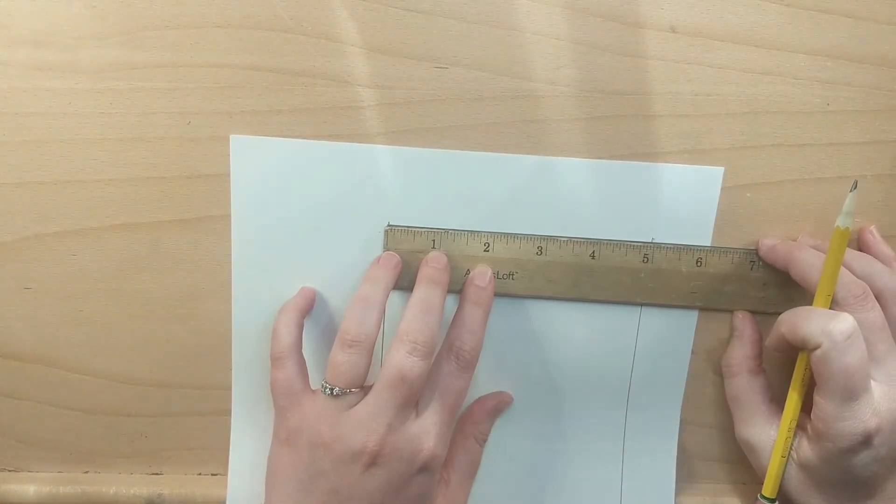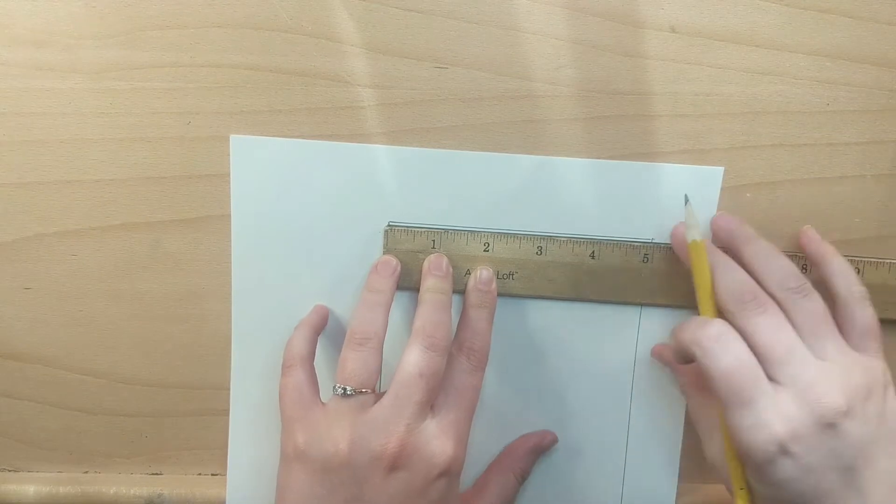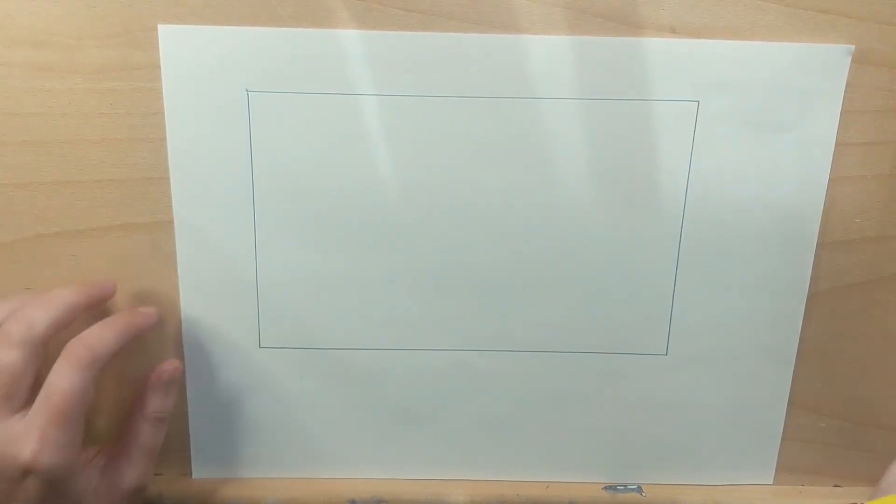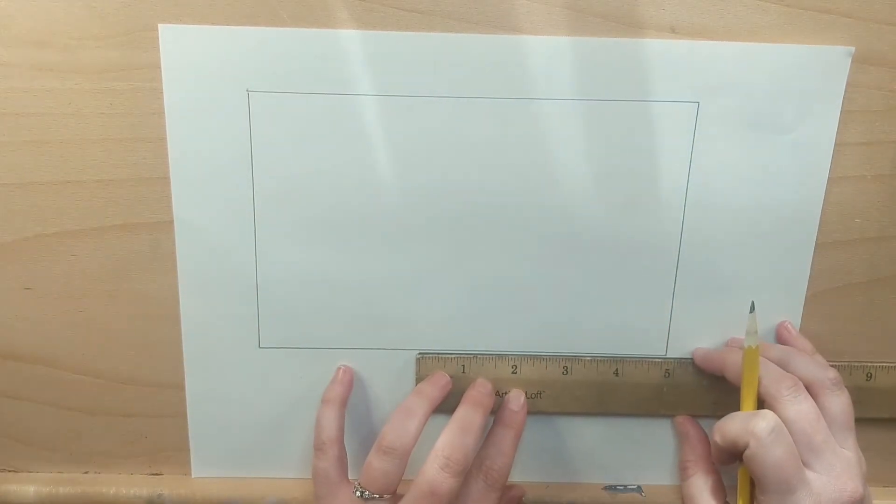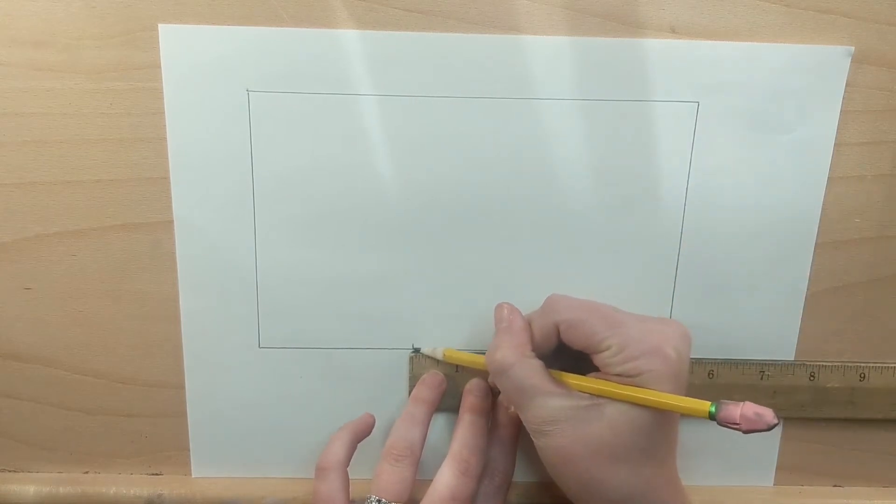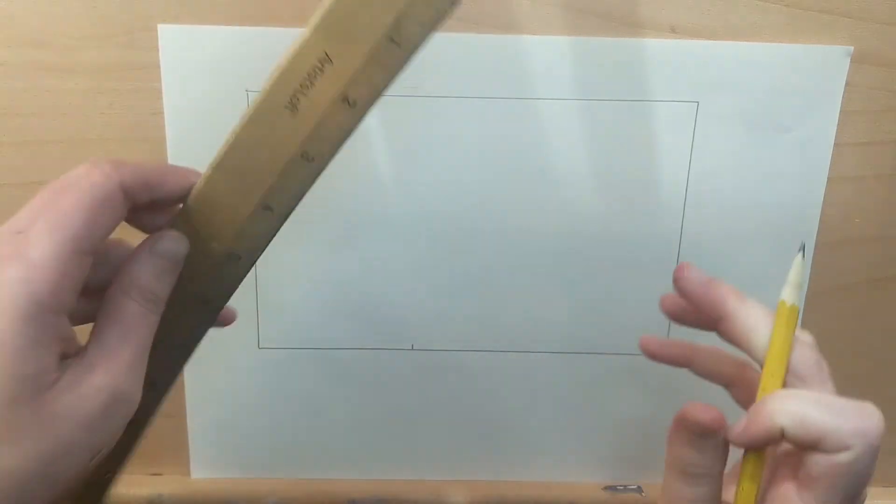Now inside that rectangle on the right side, we're going to create a 5 inch by 5 inch square. So 5 inches in from the right side, I'm going to make a little mark 5 inches in and then use that mark to draw a line up to create a square within that rectangle.